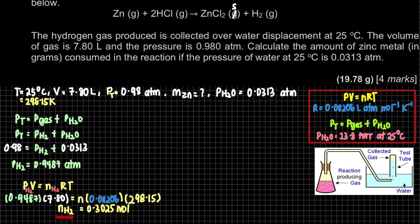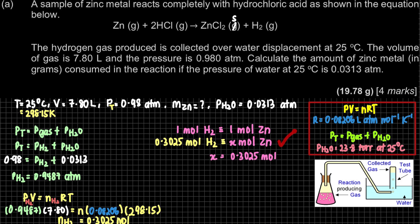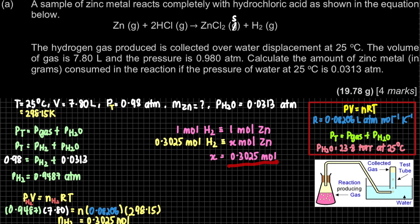The number of moles of H₂ is calculated to be 0.3025 mol. Since the stoichiometric ratio of Zn to H₂ is 1:1, the moles of zinc equals the moles of H₂, which is also 0.3025 mol.